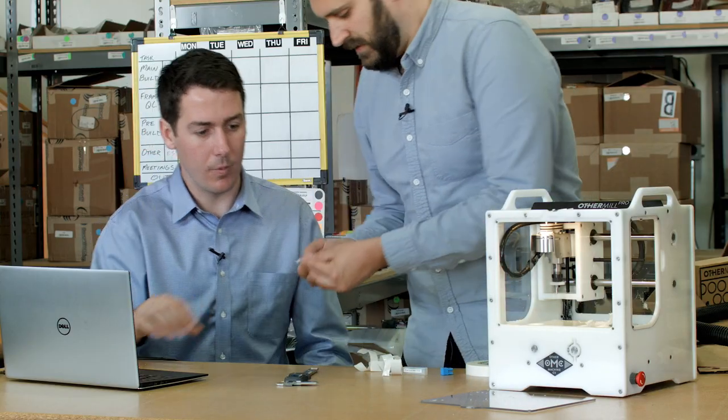And check it out. Oh, wow. There's our bit fan. Man, in a few minutes, we were able to mill out this high precision part using the Othermill Pro and Autodesk Fusion 360 in OtherPlan. That was awesome.